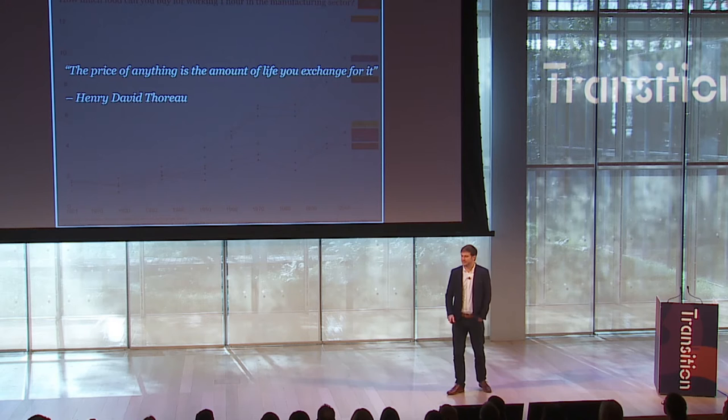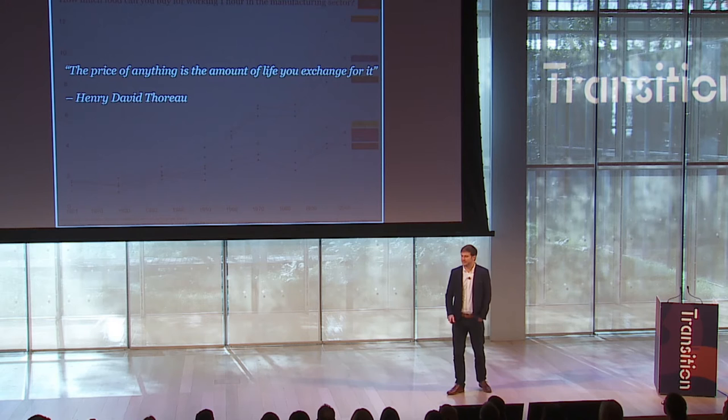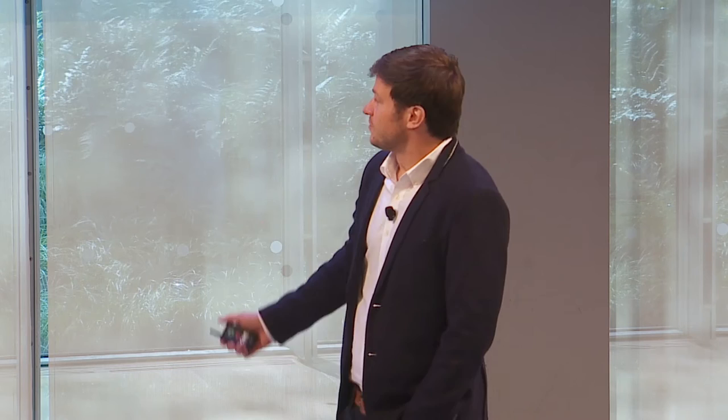Thoreau puts it nicely: the price of anything is the amount of life you exchange for it. And that's the basic mechanism behind income growth. One consequence of putting less time in for getting more out is that working hours actually decreased massively. This shows you the hours of work per week for a couple of early industrialized countries. From the 19th century, you had very high working hours — above 60 or 70 hours per week. People had no weekends, no holidays, were falling into their beds at night and getting up to work in the morning. Then it came down as productivity increased, and we now have working hours between 30 and 40.